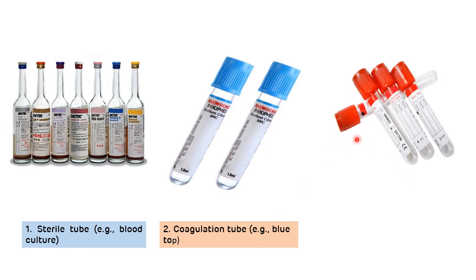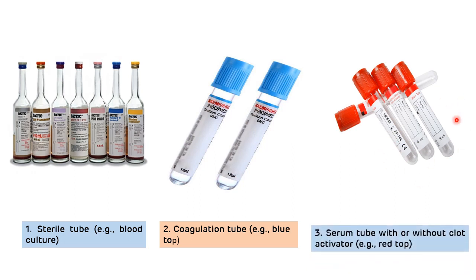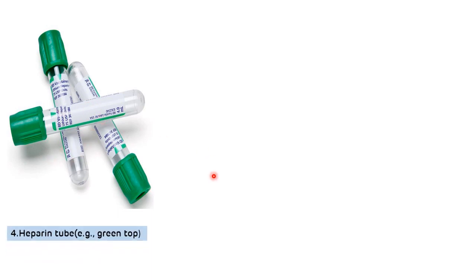The third tube in the order, collected after the coagulation tubes, is the plain tube or serum separation tube, because silica present in the serum separation tube activates clotting and also affects coagulation tests. The fourth tube in the order of draw is the heparin tube, because heparin interferes with coagulation tests as well as with serum specimen collection.